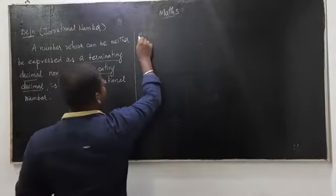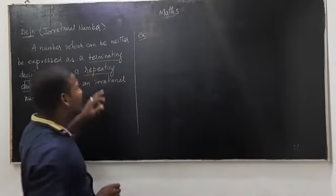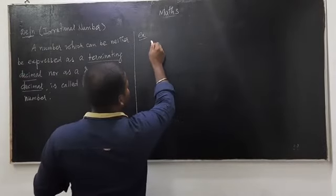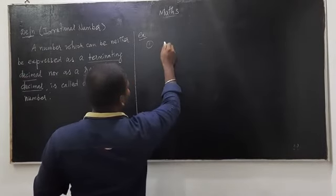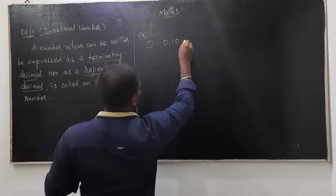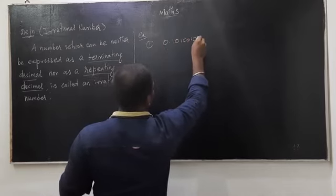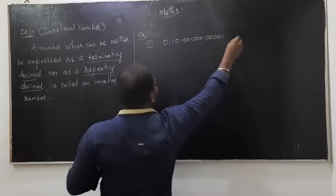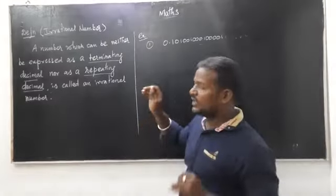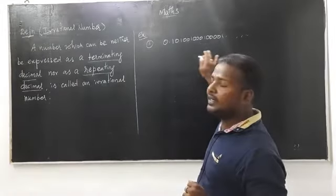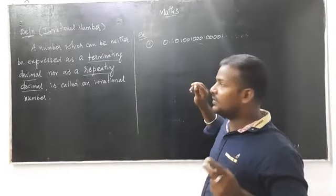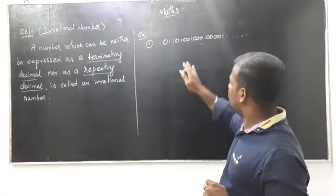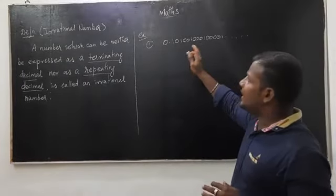If you see some examples, you can easily understand. The number should not be terminating and should not be repeating. For example, 0.1001000100001... it is still going on. First condition: it should not be terminated. Second condition: it is a non-repeating decimal — we don't have a repeating pattern here.